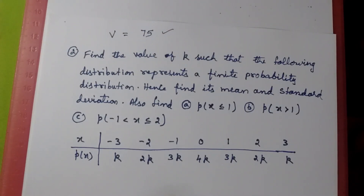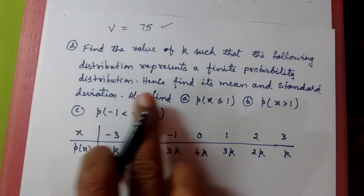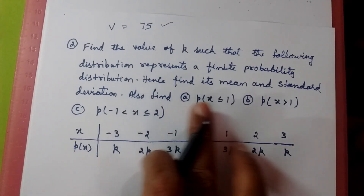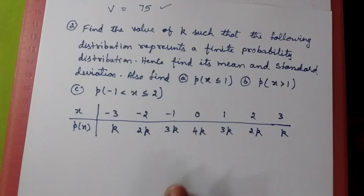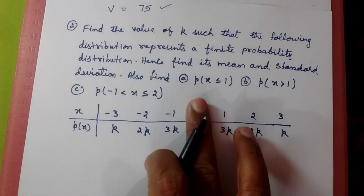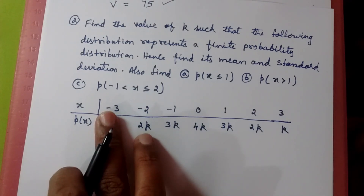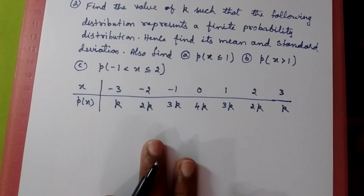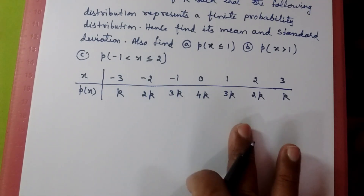The second question is: find the value of K such that the following distribution represents a finite probability distribution, then find its mean and standard deviation. Also find P of X less than or equal to 1, P of X greater than 1, and P of X lying between minus 1 and 2. The table with values of x and p of x in terms of K is given.